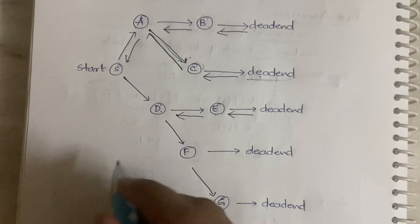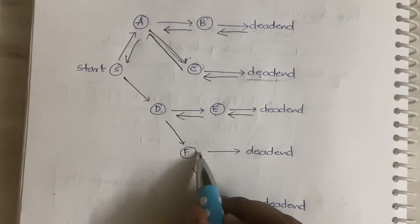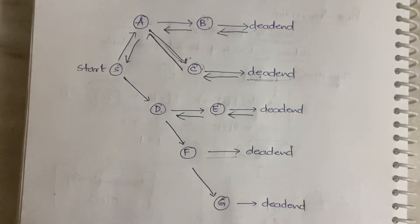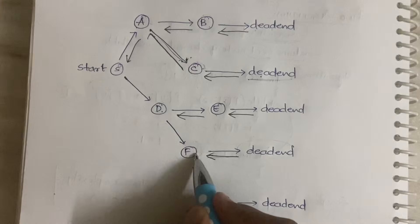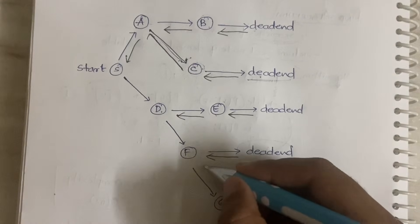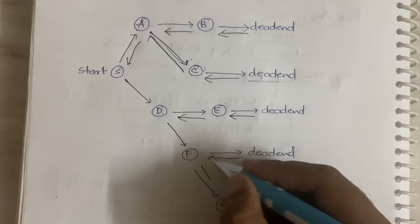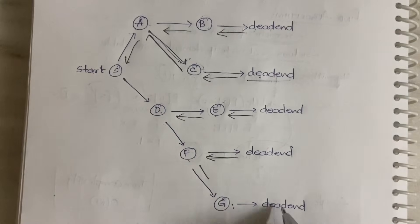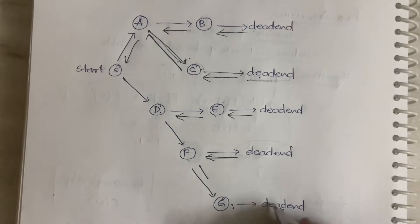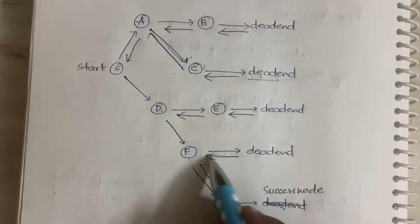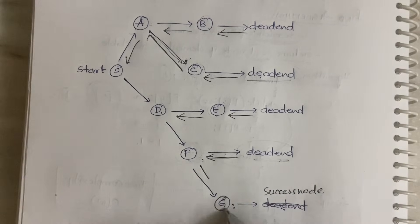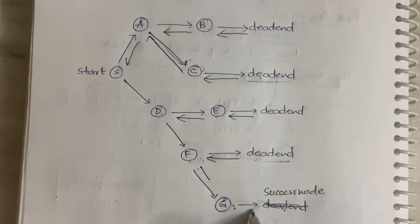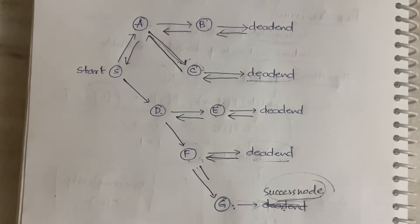From D you have another sub-path, so you go from D to F. From F you hit a dead end — that is not your destination — so you come back to F. From F you have a sub-node G, so you go from F to G. From G you reach the success node — that is your destination. So you have reached your goal and you can stop backtracking.